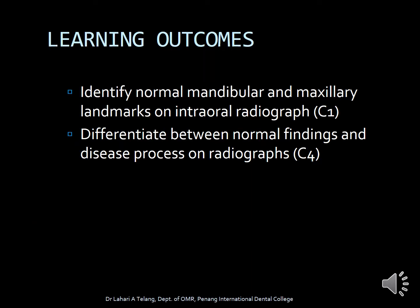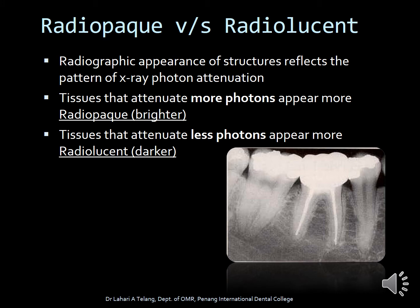We'll be talking about identifying normal mandibular and maxillary landmarks on intraoral radiographs and how to differentiate between normal findings and disease processes. First, it's important to understand the difference between radiopaque and radiolucent. Radiographic appearances of structures reflect the pattern of x-ray photon attenuation. Tissues that attenuate more photons appear more radiopaque or brighter, while tissues that attenuate less photons appear more radiolucent or darker. On this radiograph, the radiolucent aspect is the pulp, and the radiopaque ones are enamel, dentine, and restorations.